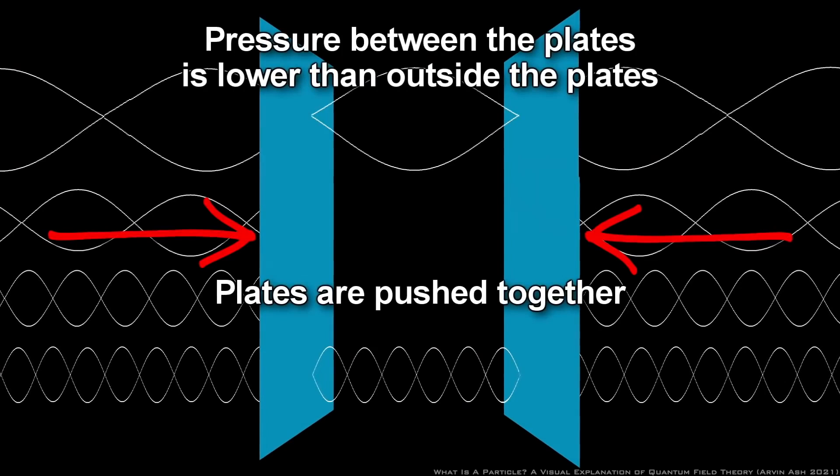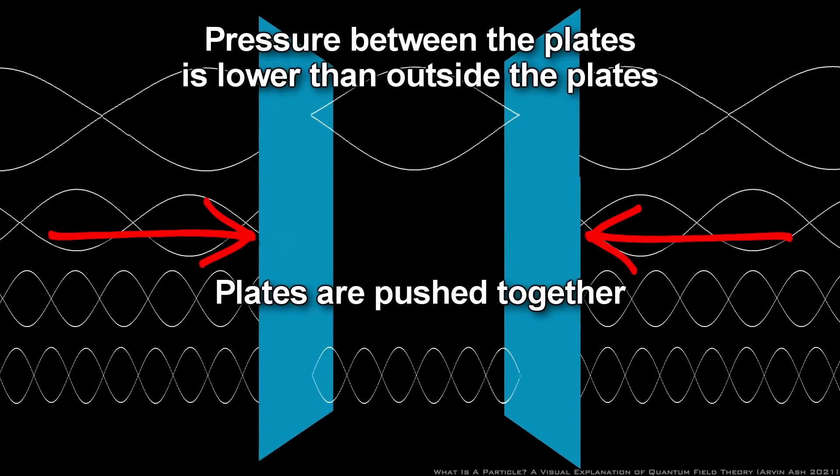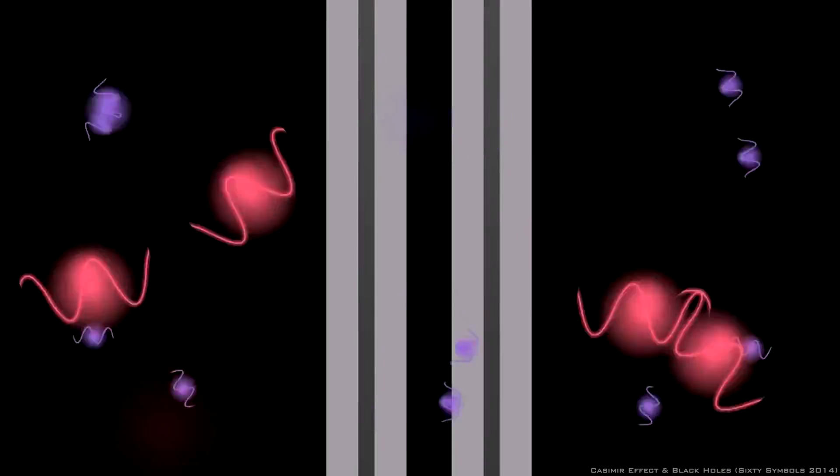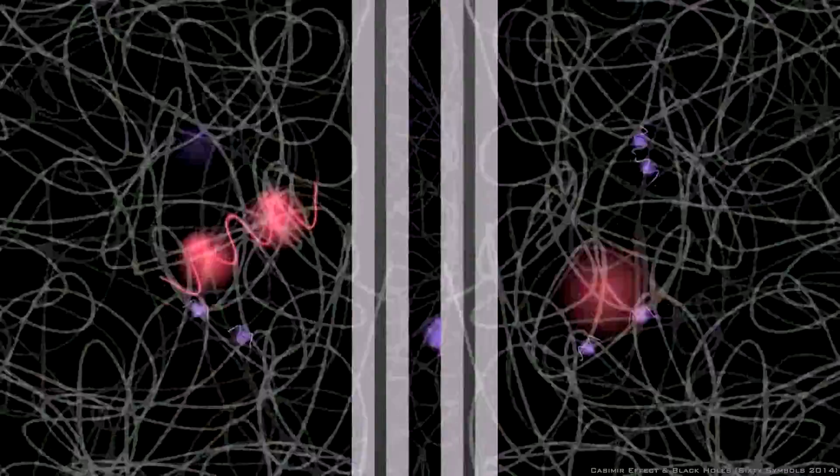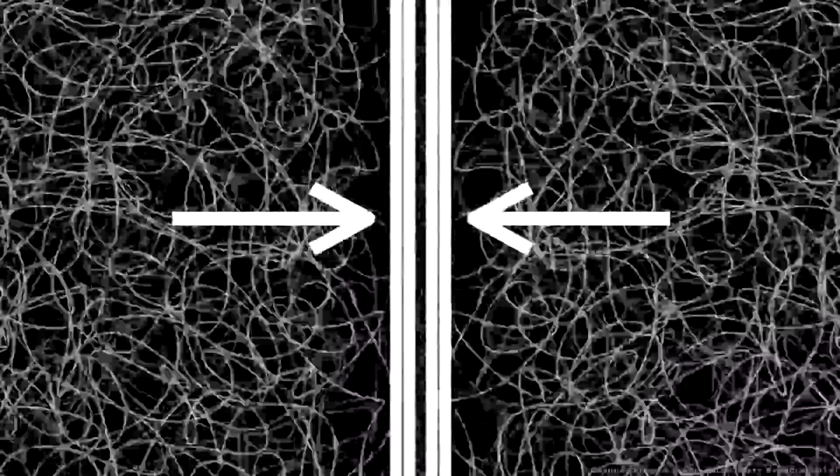This difference in virtual particle density creates an imbalance in quantum vacuum pressure. The higher pressure of virtual particles outside the plates creates a net force that pushes the plates together. Experiments have confirmed this Casimir effect, providing empirical evidence for the presence of virtual particles and the dynamic nature of the quantum vacuum.